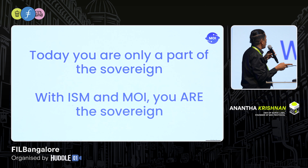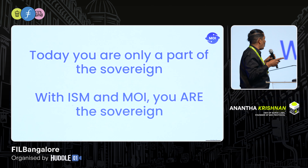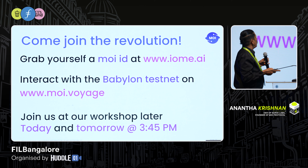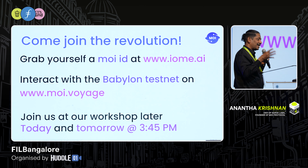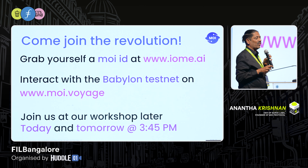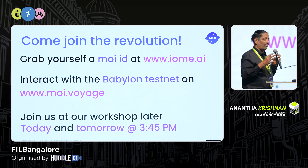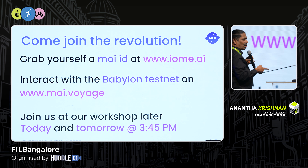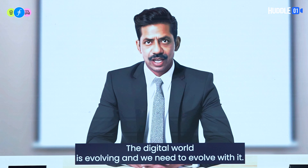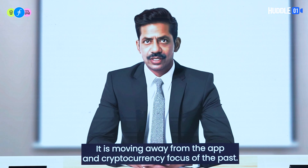I leave you with this: today, you are only a part of the sovereign. With ISM and MOI, you are the sovereign — you are able to control peer-to-peer interactions the way you want. Come join this revolution. This is about building a new contextual compute framework, fundamentally altering computation so participants can be part of it. You can create your own participant ID, interact on the Babylon Testnet, and do your own interactions. The digital world is evolving and we need to evolve with it — moving away from app and cryptocurrency focus toward a more interactive, peer-to-peer model focused on people, assets, and values.